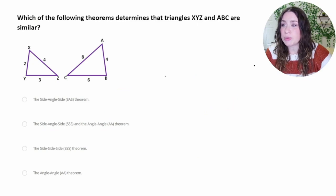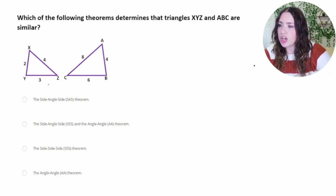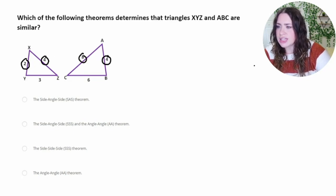So the next question asks, which of the following theorems determines that triangles XYZ and ABC are similar? So if you don't remember, similar figures have the same shape and have proportional dimensions. So as we look at sides that probably correspond to each other, we're looking at 2 and 4, and notice the scale factor there is 2, and then 4 and 8, that scale factor is 2, and same with 3 to 6.